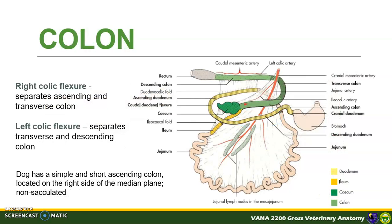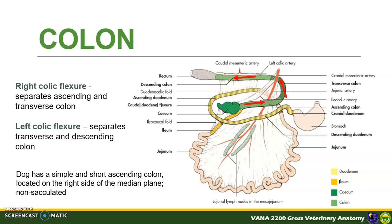The colon is divided into ascending, transverse, and descending segments and their connecting flexures. This naming is adapted from human anatomy but does not strictly represent ascending, transverse, and descending positions in an animal. The colon lies in the dorsal part of the abdominal cavity and is shaped like a shepherd's crook or question mark, and it is held by the mesocolon. In the dog, the ascending colon is simple and short, located on the right side of the median plane, and it is not sacculated. The right colic flexure separates the ascending and transverse colon, while the left colic flexure separates the transverse and descending colon.